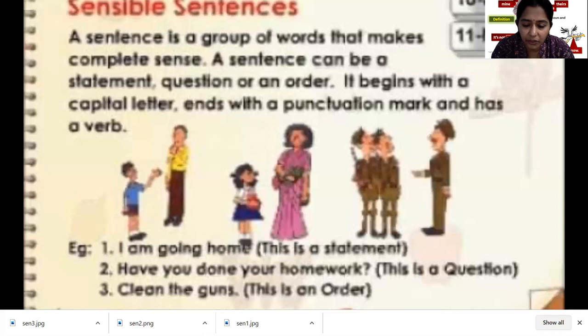When you talk something it should be meaningful. 'Go park I' - is it like a meaningful sentence? No. 'I go to park' - a sentence can be a statement, question, or an order. What are you doing here? That can be a proper sentence or a question, right? So it begins with a capital letter and ends with a punctuation mark and has a verb. Verb means action words.